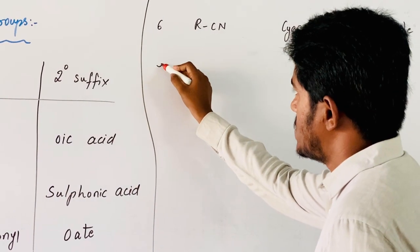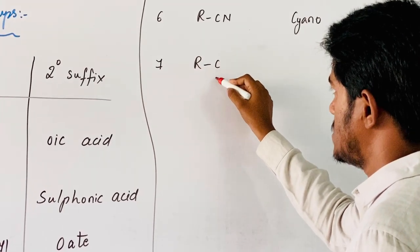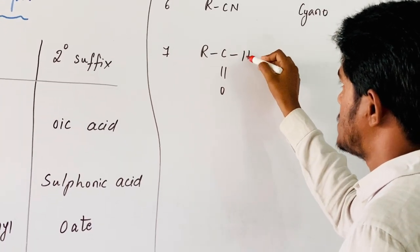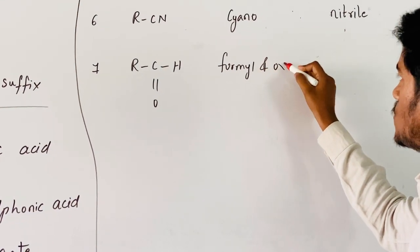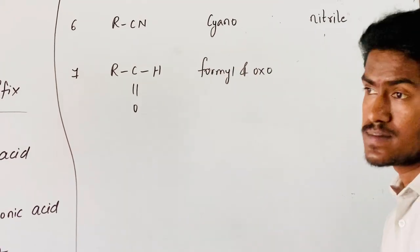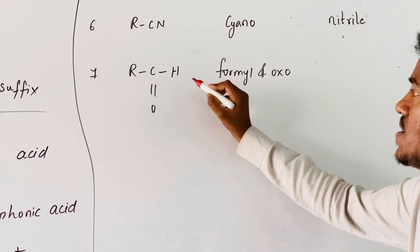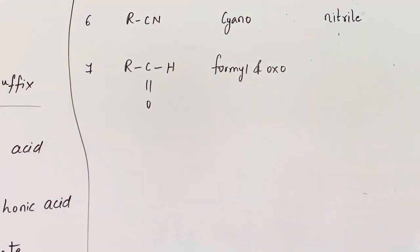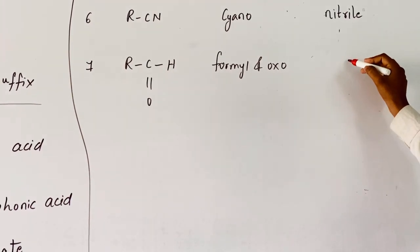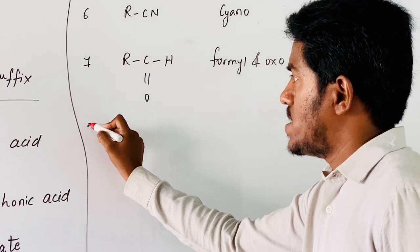Seventh one: R-C-H-O. The prefix is formyl and oxo. When it comes to oxo, the hydrogen is replaced with one more R prime. At that time it is keto. Secondary suffix is al.